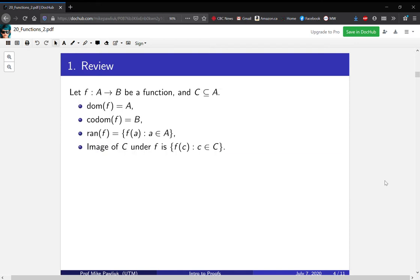Here's a bit of review in case you've forgotten about functions. Let f : A → B be a function and let C ⊆ A. The domain of f is represented by A, it's on the left side of the arrow. The codomain is where it's going to, it's B. The range of f is {f(a) : a ∈ A}. In other words, it's all outputs of the function.